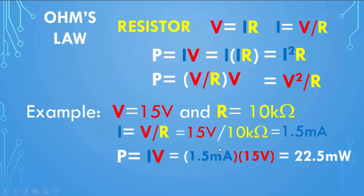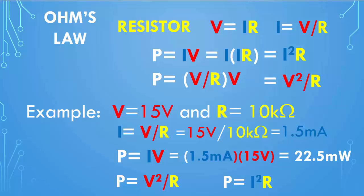Now you can also calculate power in a couple of ways. Since we are given voltage and resistance, you could have used the formula V²/R. If you are given the current and the resistor, then you can use the formula I²R. Using voltage and resistance, we have V²/R.